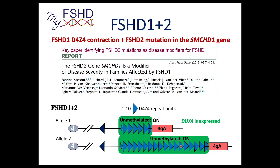These FSHD1 plus 2 individuals are typically more severe than one would expect for their deletion size. Traditionally, one to three repeat units is the more severe form and seven to 10 is very mild, often asymptomatic. If someone has seven, eight, nine, or ten repeat units yet is relatively severe, there's a good chance they're FSHD1 plus 2.